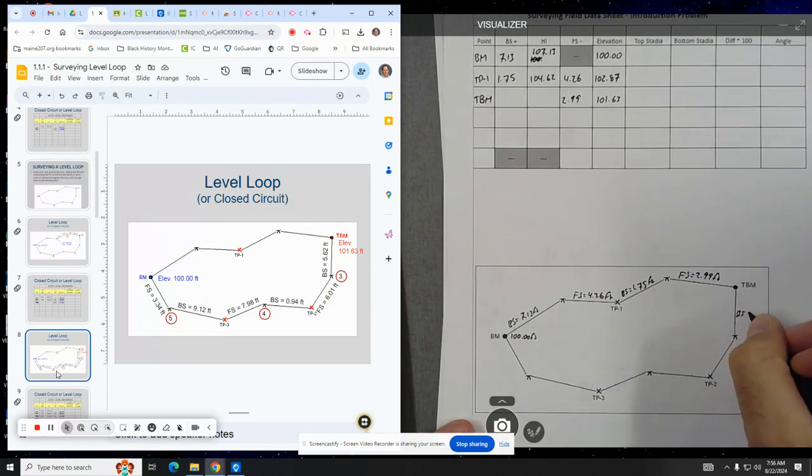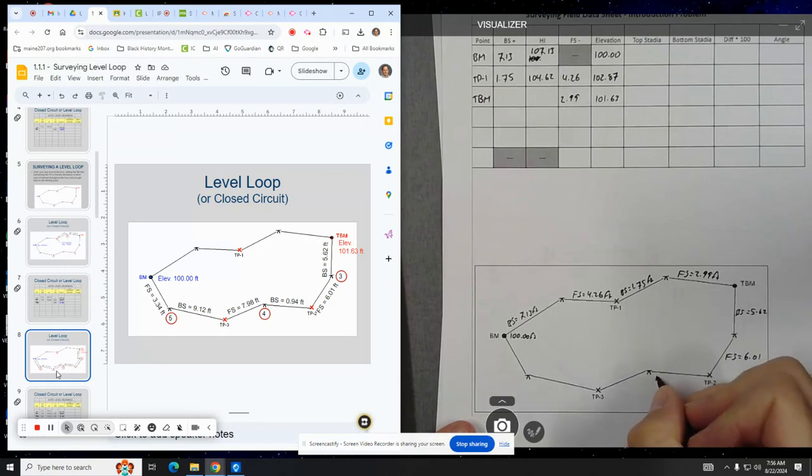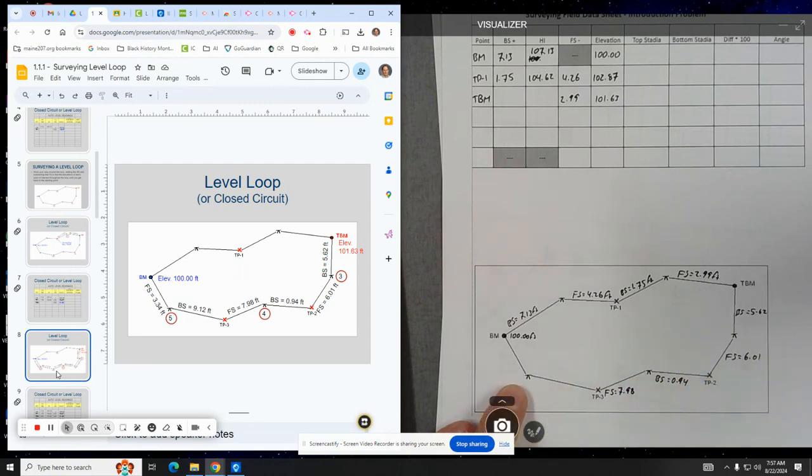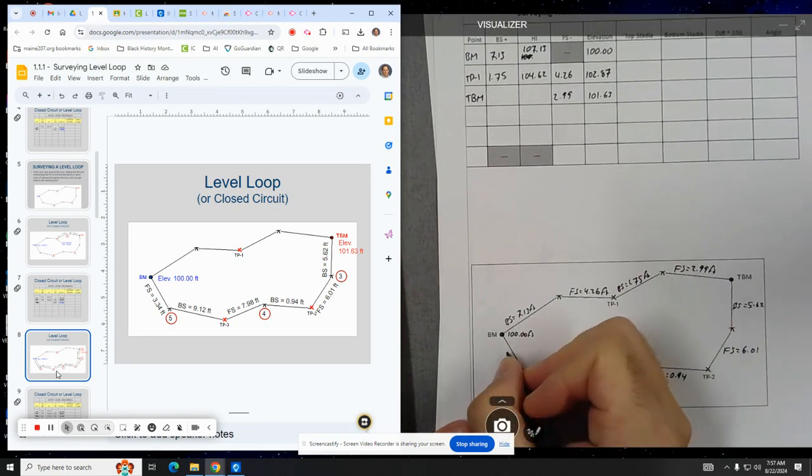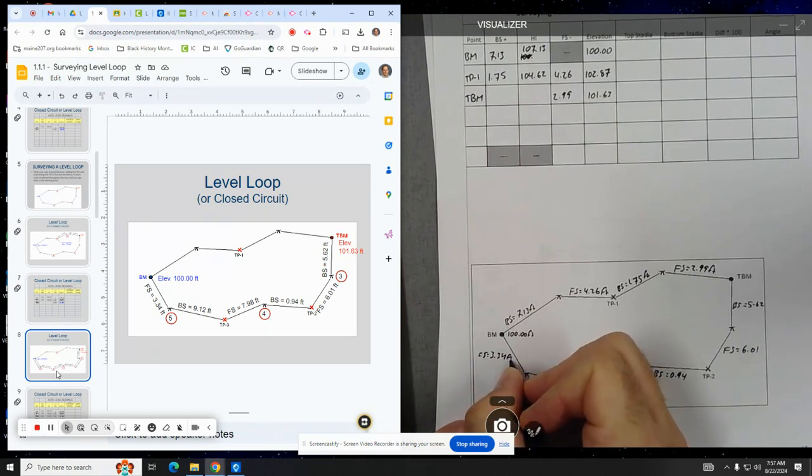This next slide kind of fast forwards a little bit. It just gives you all the rest of the numbers. So again, the back sight to here is 5.62. The foresight to here is 6.01. When you move the instrument again, the back sight back to TP2, it's saying is 0.94. The foresight to TP3, so when the rod leapfrogs to here, it's 7.98. And then the final set of readings, the instrument looks back at TP3, so the back sight is 9.12. And the foresight, again, it's all loop. It always goes in a big loop. The foresight going back to the, or yeah, going to the building monument, the original building monument is 3.34 feet.